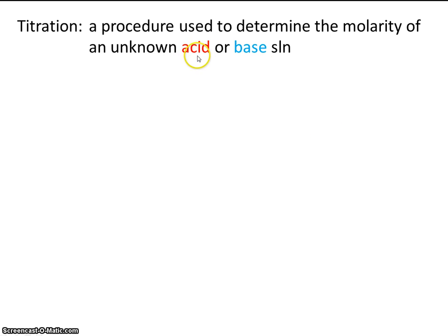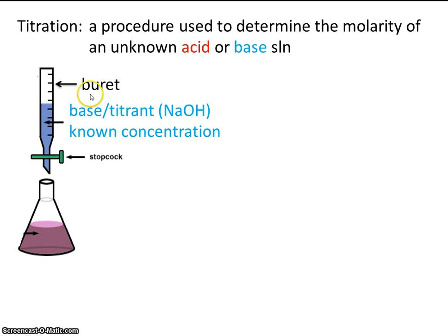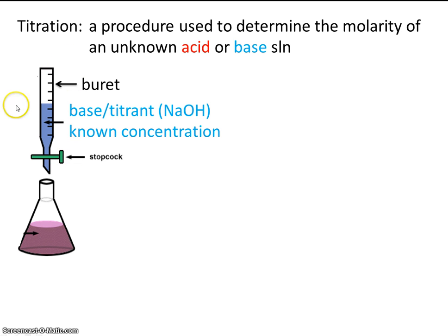Notice all the stuff that pertains to acid will be in red, and the stuff that pertains to the base will be in blue. Here's our burette, and inside the burette will be the base — also called the titrant. In this case, we'll be using sodium hydroxide, and during a titration we have to know its concentration, so this would be of known concentration.